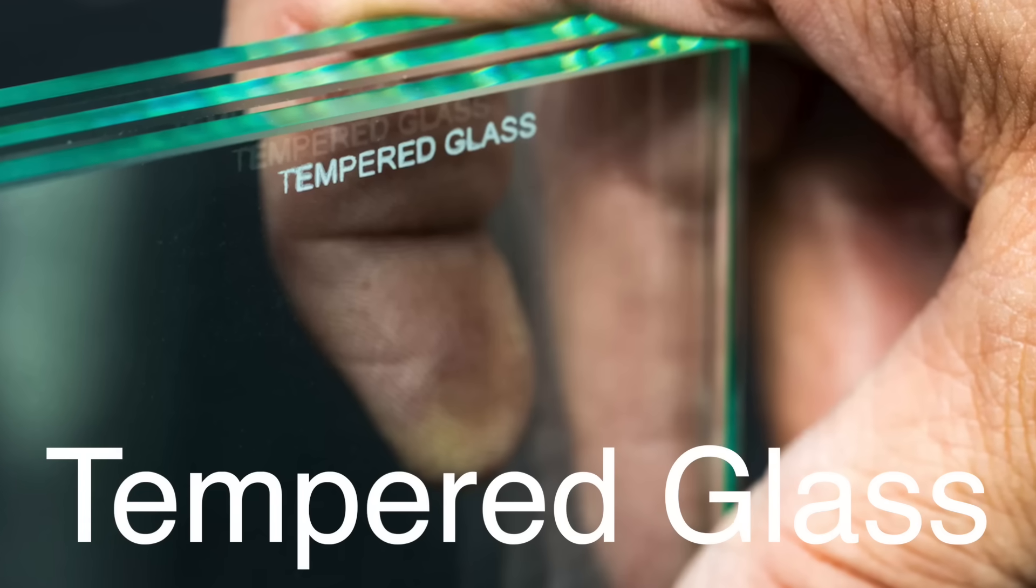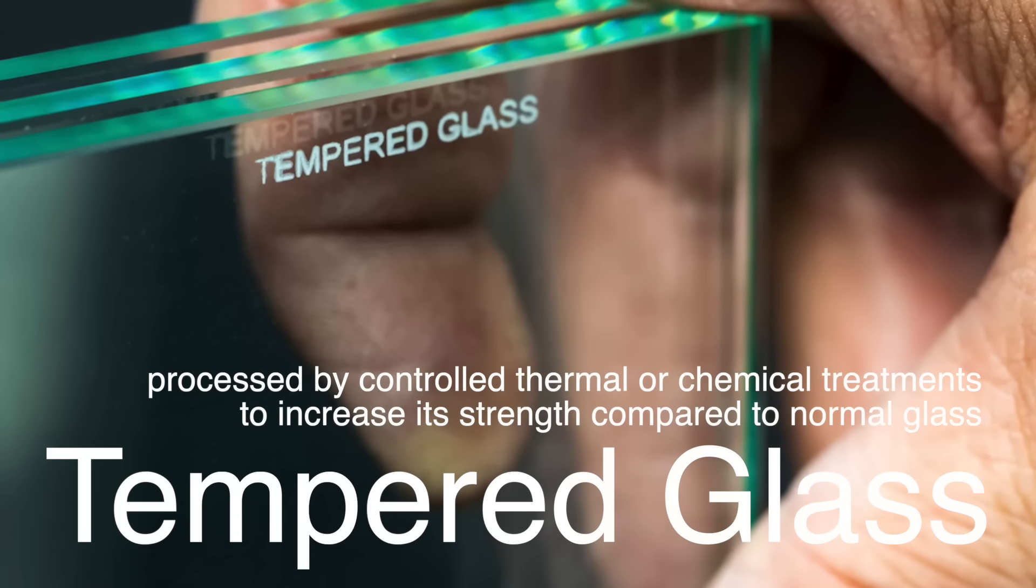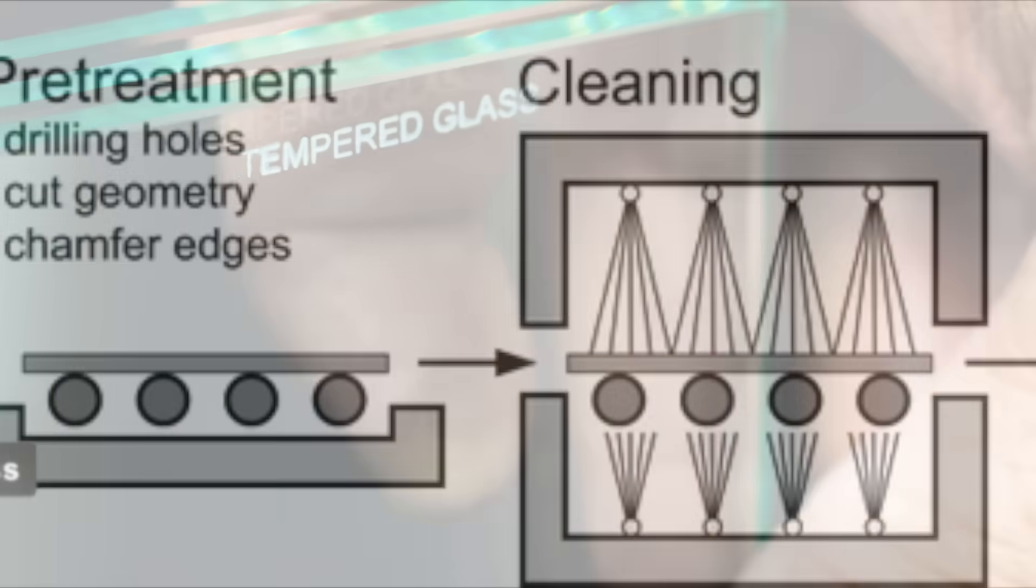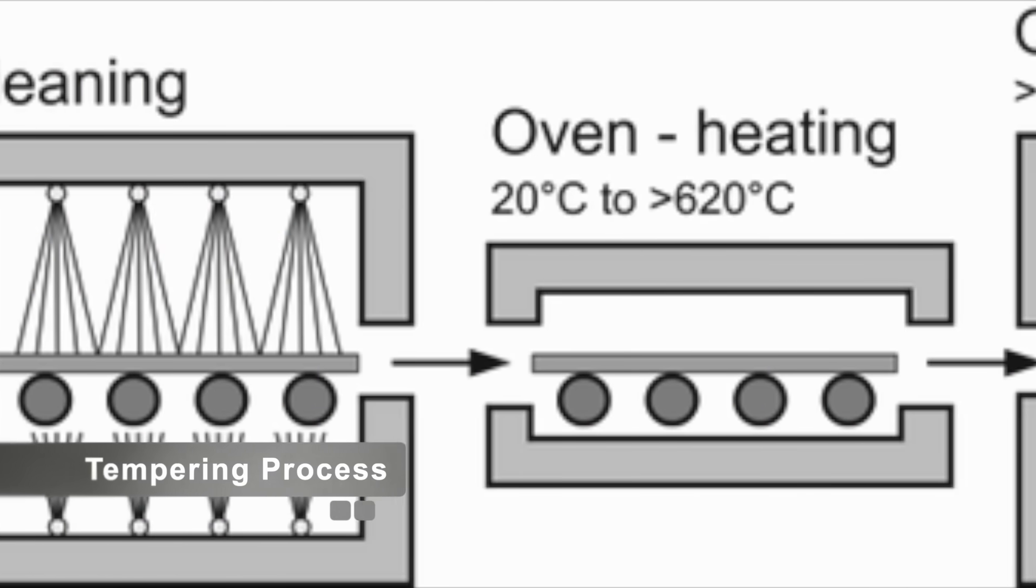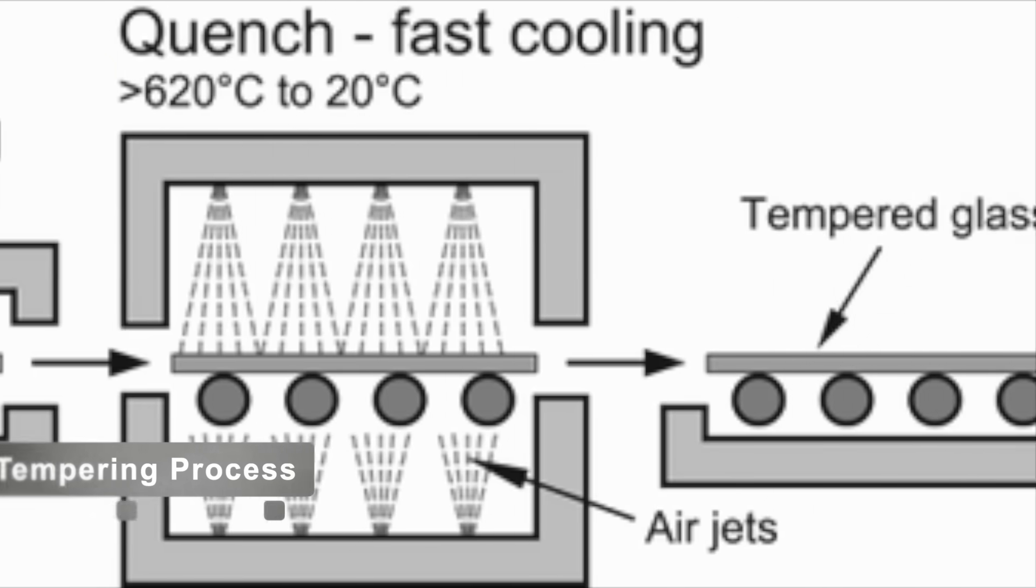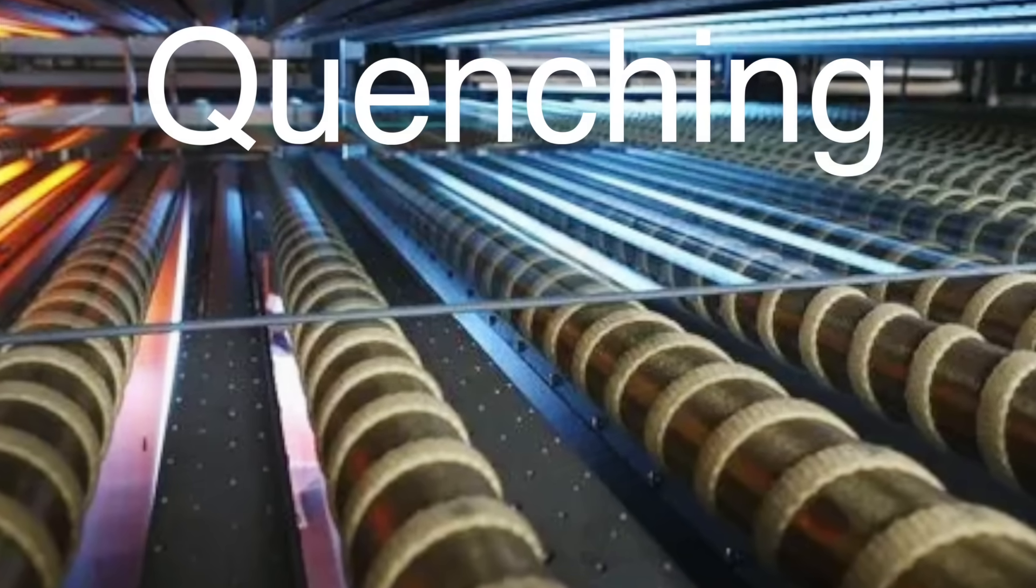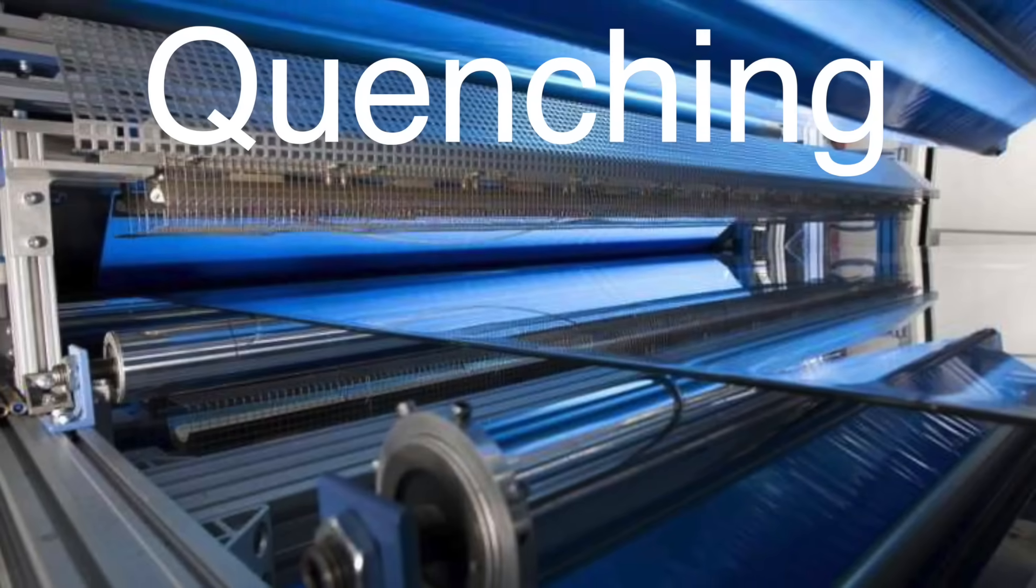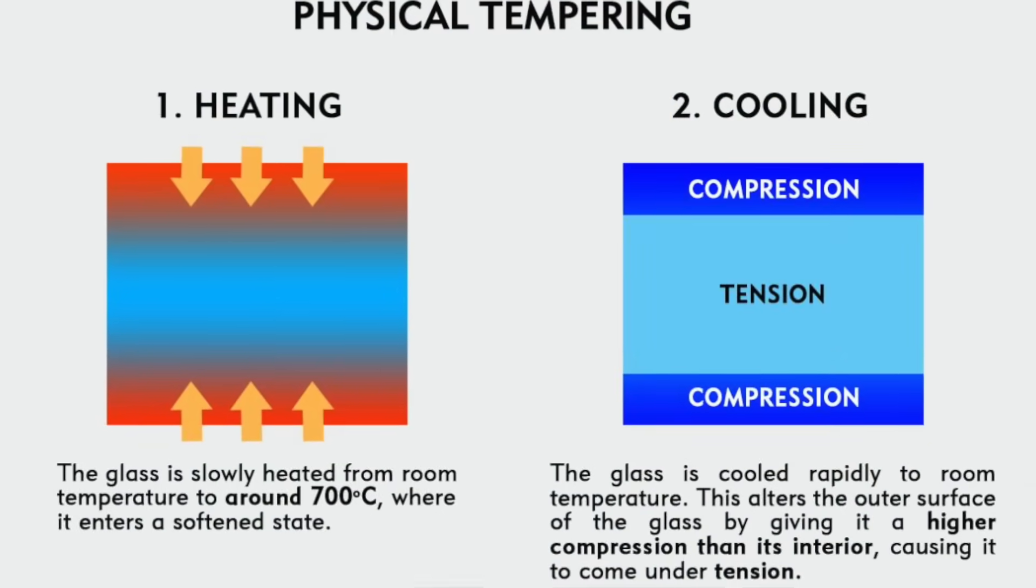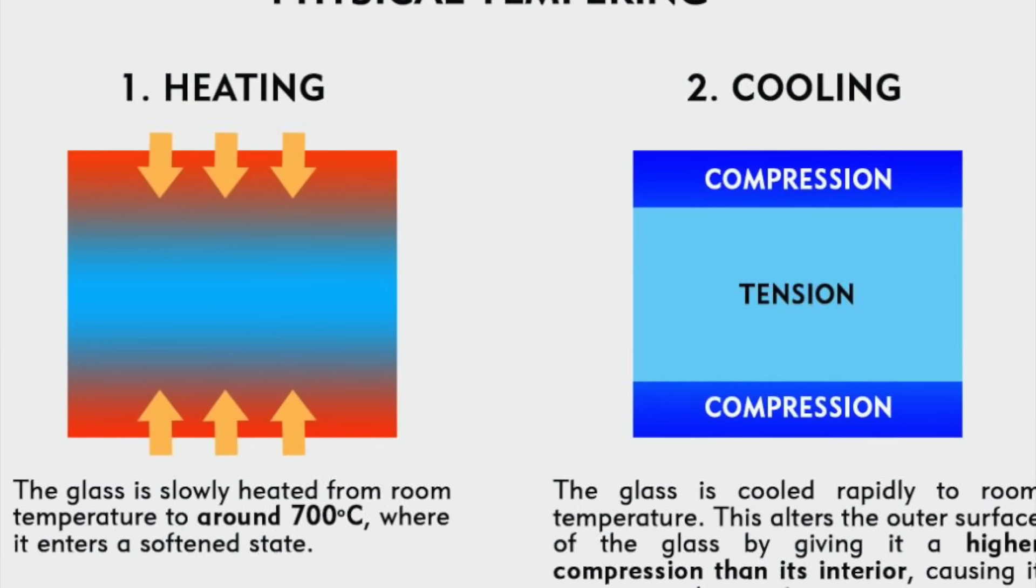Tempered glass is a type of safety glass that is processed by controlled thermal or chemical treatments to increase its strength compared to normal glass. The tempering process involves heating the glass to around 600 degrees Celsius and then rapidly cooling it. This rapid cooling, known as quenching, locks the outer surfaces into compression and the inner surfaces into tension, resulting in glass much stronger than regular annealed glass.